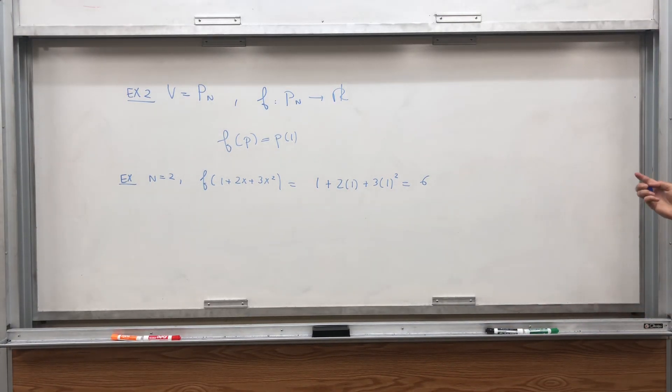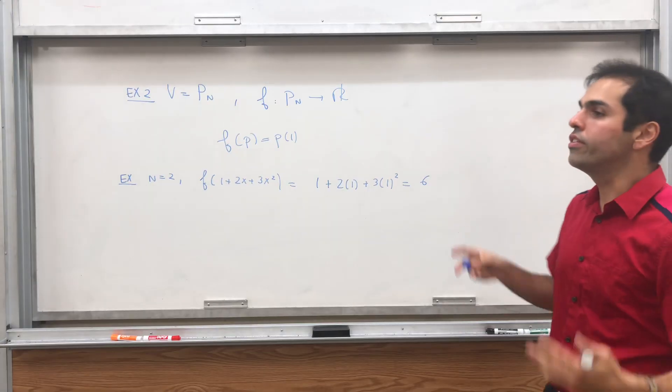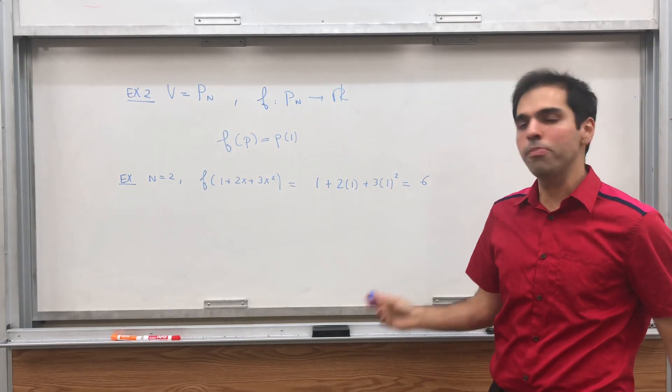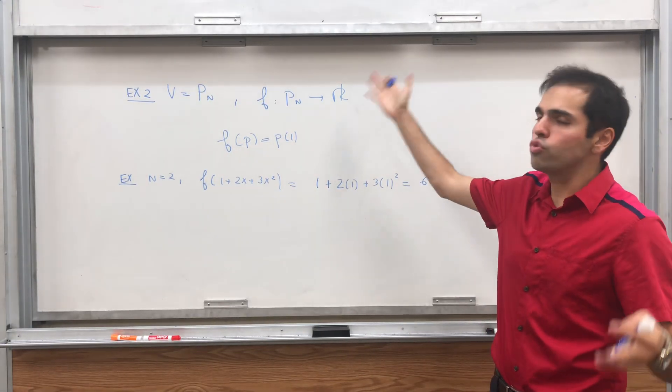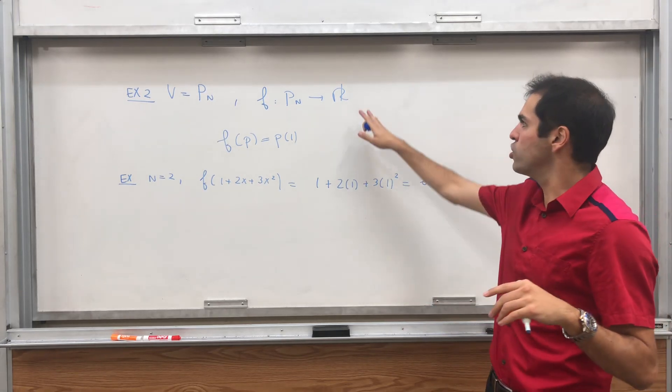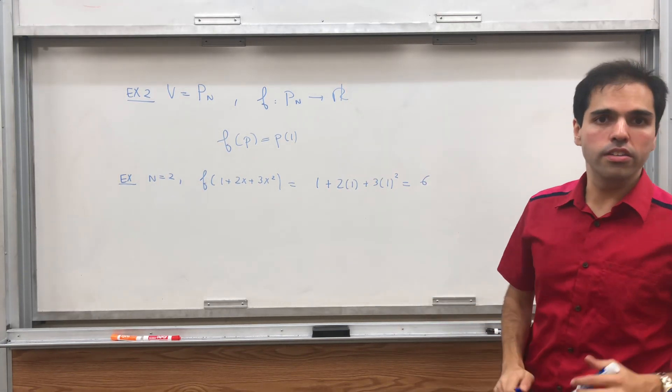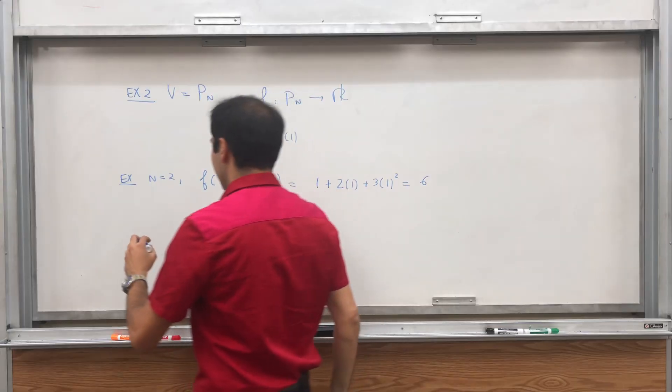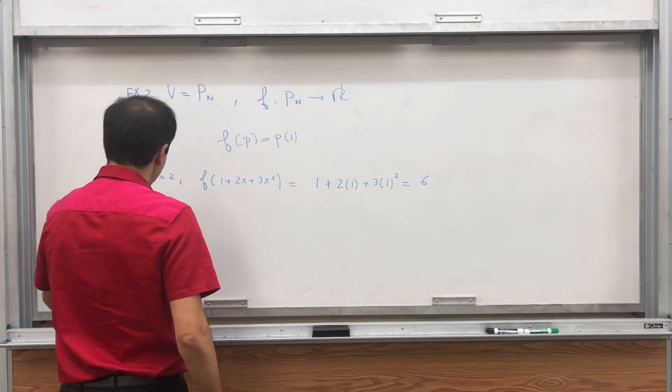So again, I know it's this weird thing. You always say, oh, it's a dual space. It's this weird object. It's really not. It's just a space of linear transformations whose output is in the field.